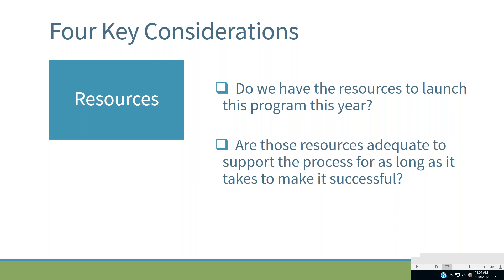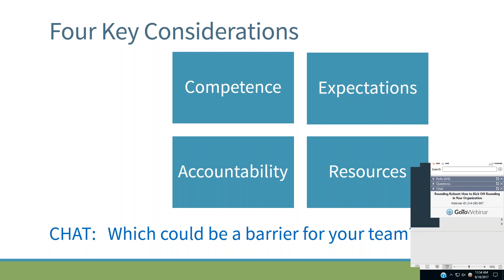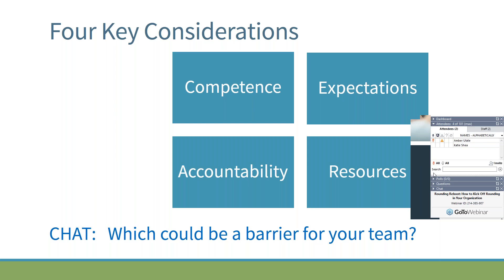Now we're going to stop and do our one chat for today. Think about which of these four areas — competence, expectations, accountability, resources — is going to be a barrier for you or your team. Which might be the biggest issue? You might have a couple going on. Please take a minute and start typing it in.